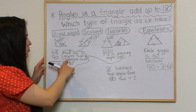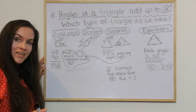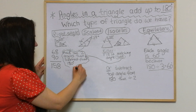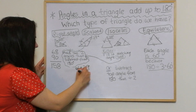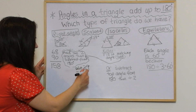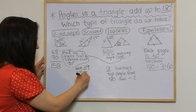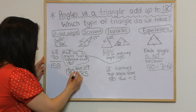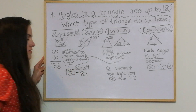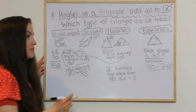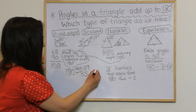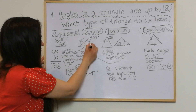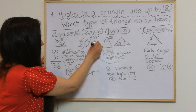In this scalene triangle, the same rules apply — I just add the two angles then subtract from 180. So I do 46 add 39, which gives me 85, and then 180 take away 85 gives me 95 degrees. So that missing angle is 95 degrees.